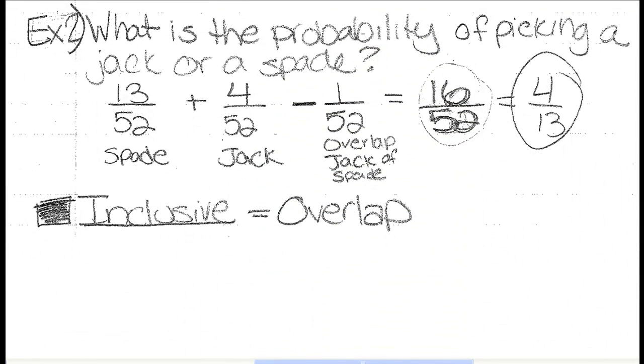What is the probability of picking a jack or a spade in example 2? So again, or is more. We're going to be adding again. So the probability of picking a jack would be 4 out of 52, because there's 4 jacks in the deck, 52 total. The probability of picking a spade would be 13 out of 52, because there are 13 spades in the deck.